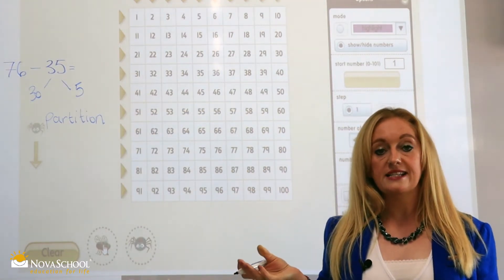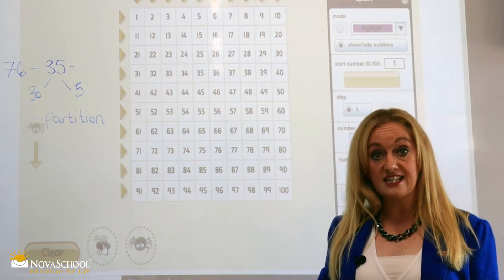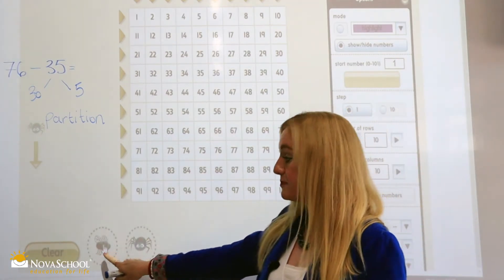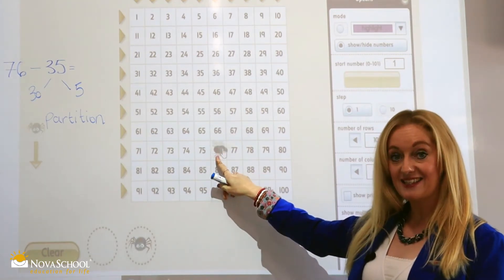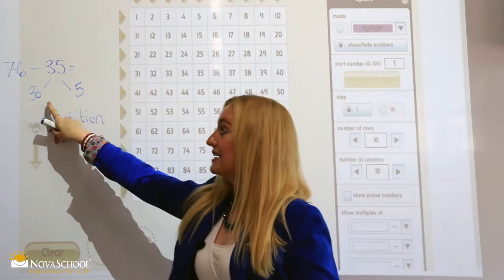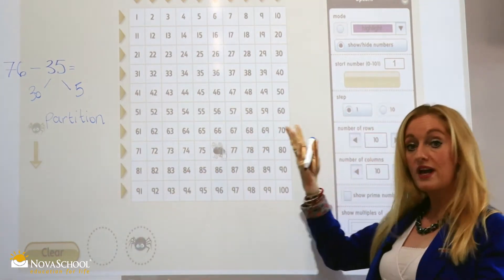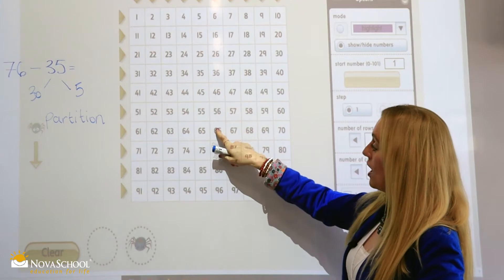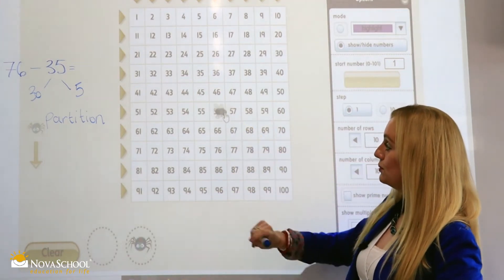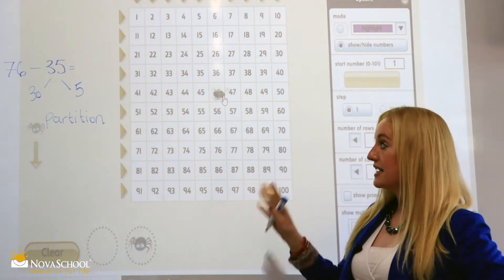What are we going to do first? We're going to subtract 30. So we put the fly onto 76. Then we first subtract 30. So which way are we going to go? To subtract we go up. 1, 2, 3, okay? Good? Right,